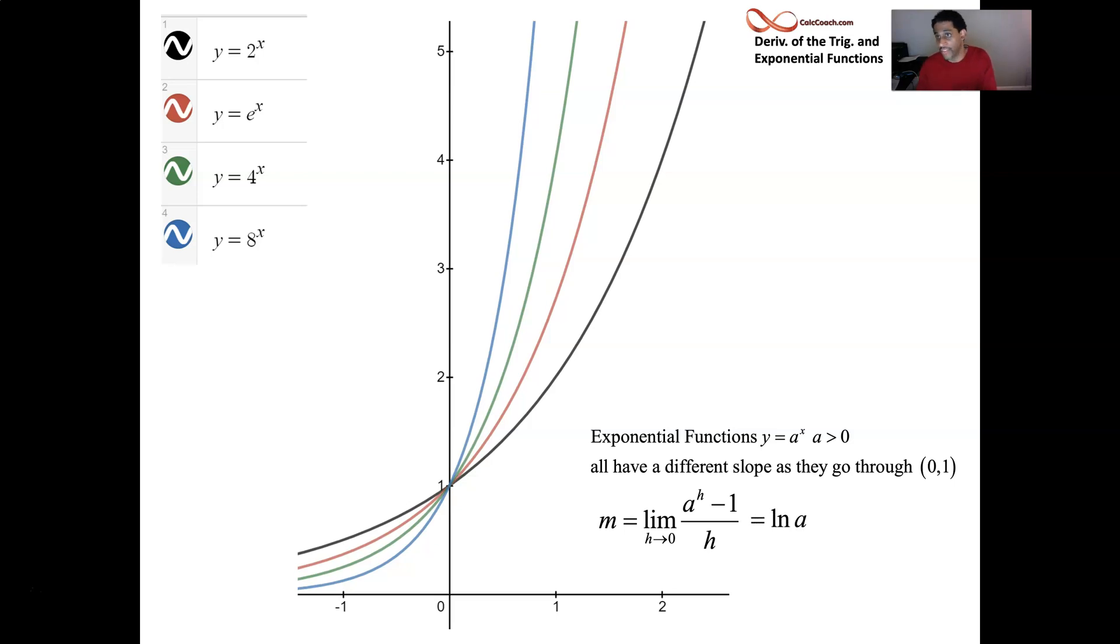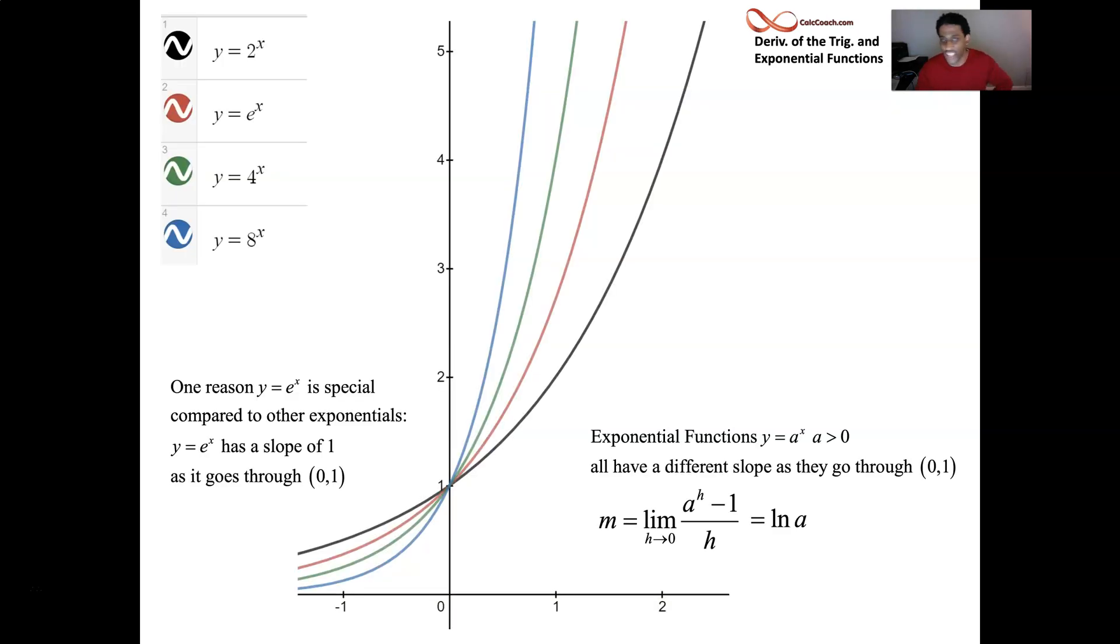Therefore, if there's an e in there for a, then natural log of e is exactly one. So that's what makes e to the x so special. Of all the exponential functions that happen when x is zero, definitely y is one. They all go through that one point, but only one of them has a slope of one for its tangent line. The rate of change of the function is exactly equal to the function. That's what makes e to the x so special.